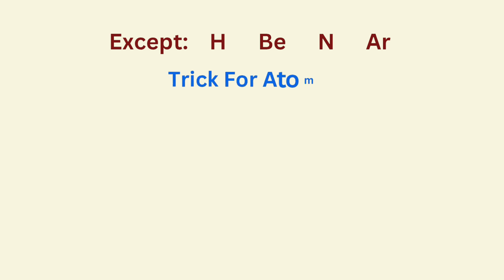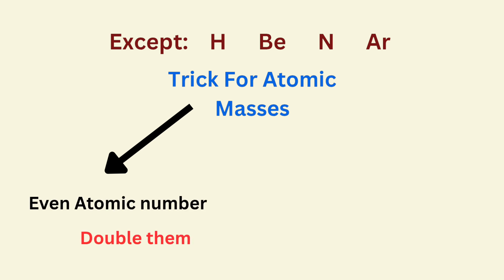Trick for atomic masses. For even atomic numbers, double them. And for odd atomic numbers, double them plus 1. Here are some elements, their atomic number and their atomic masses.